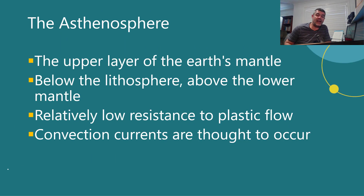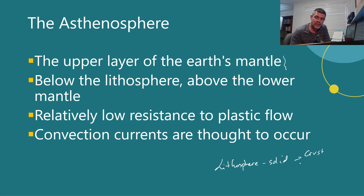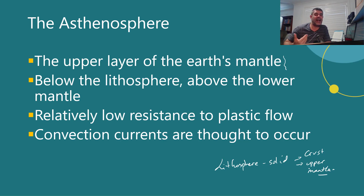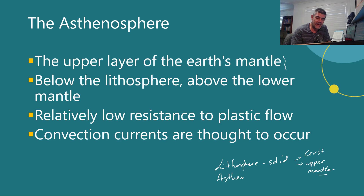The asthenosphere is the upper layer of the Earth's mantle — but not the very top layer. The lithosphere, which we've already discussed, is the solid material on the surface of the Earth, including all of the crust and the upper part of the mantle. The mantle is so thick it has several defined layers, and the asthenosphere sits just below the lithosphere — not at the very top of the mantle.